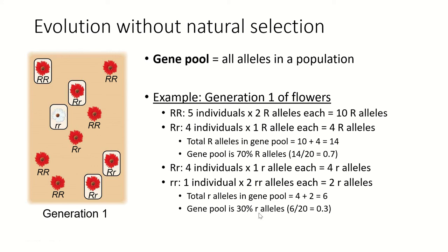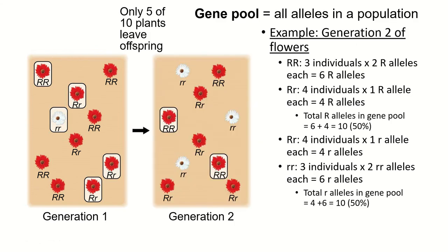So the gene pool is 70% dominant alleles and 30% recessive alleles. These percentages are our allele frequencies — literally how frequent each allele is in the population. After one generation, not because of any kind of selection on color, just because of which individuals randomly got fertilized and which traits got passed on, we see a shift in our gene pool.